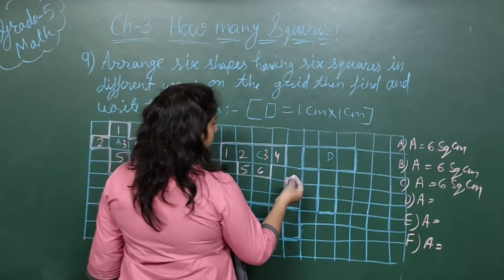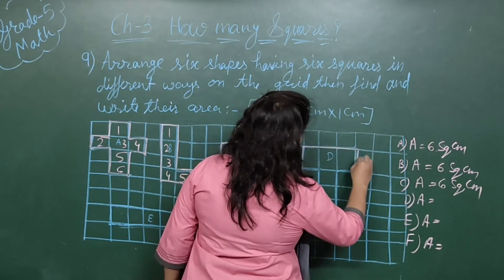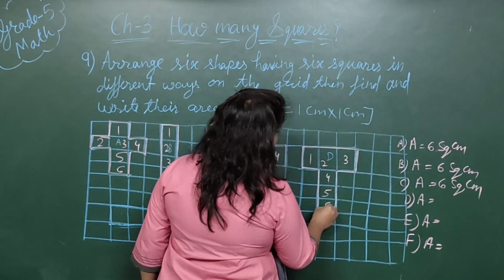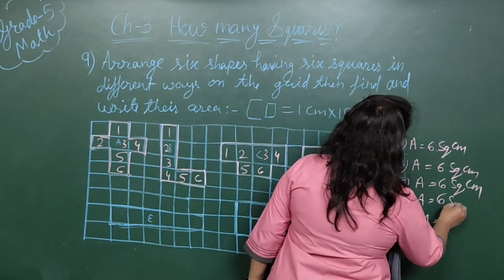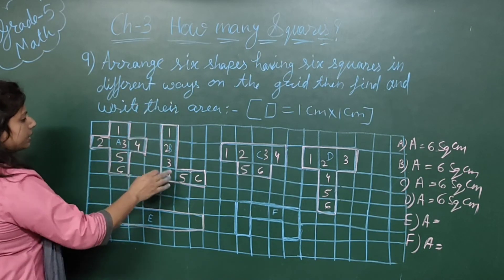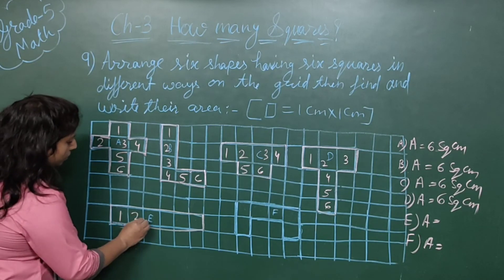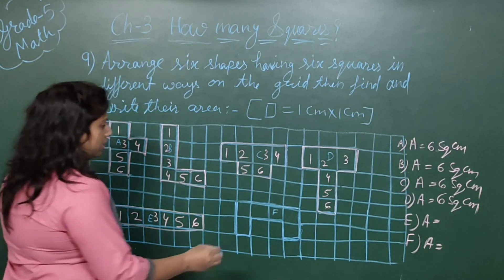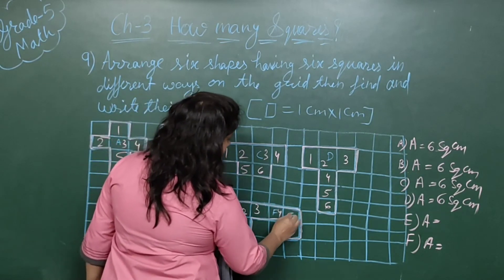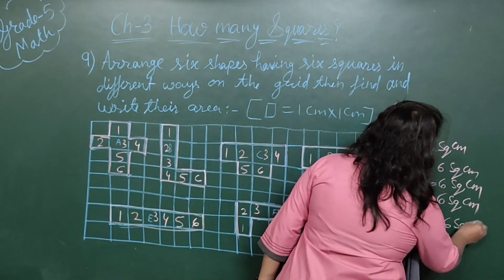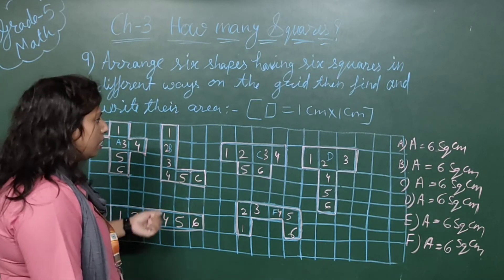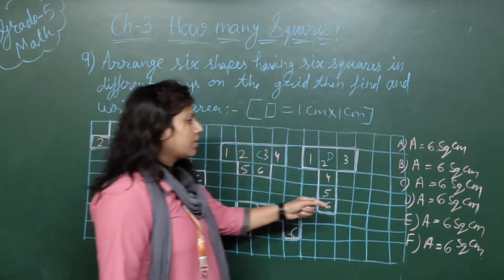Now see picture number D. You can draw a different shape with an area of only 6 square centimeters — it means the square count is also 6. Counting: 1, 2, 3, 4, 5, 6 — the area will be the same, 6 square centimeters. Students, you can draw these pictures in your own way as long as each has 6 squares and an area of 6 square centimeters.